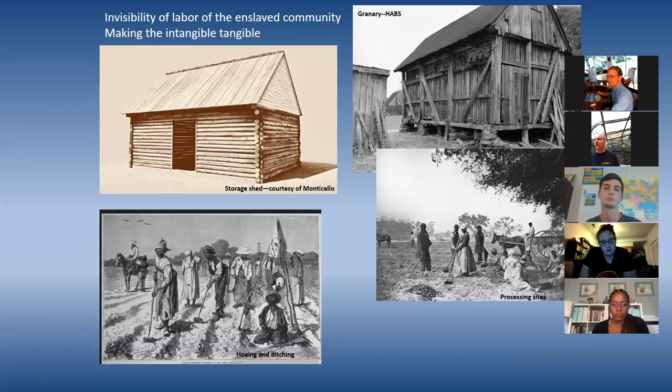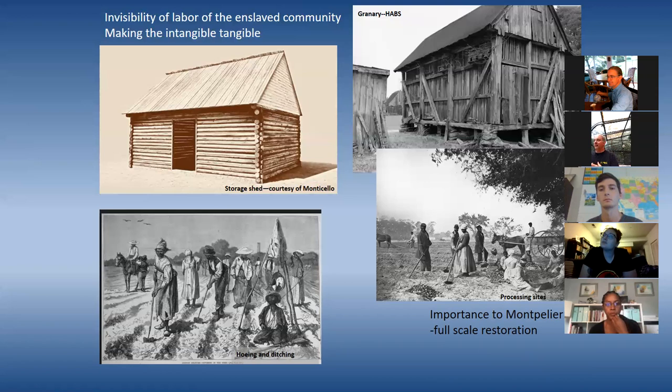For us at Montpelier, full-scale restoration means all 2,650 acres. Once we restored the house in 2008, we realized it sat on a 20th-century landscape and found all these sites that need to be brought back. We're probably not going to restore every last barn, but we want to know what sites are there so we can incorporate that into the story.